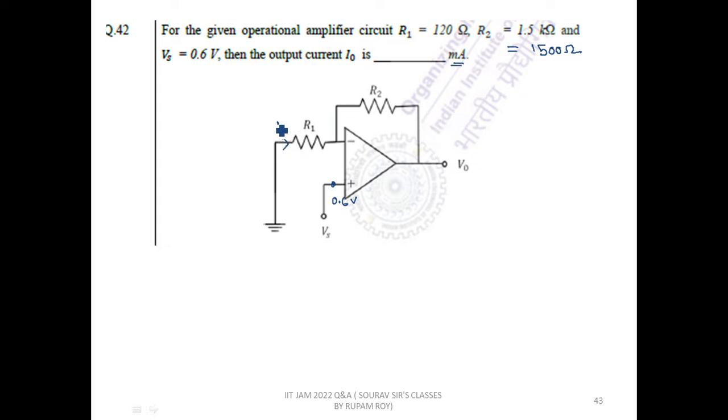Let this be current i1, this is current i2, and i2 is the output current. Now here the voltage is 0.6 volt, so at this point the voltage also will be 0.6 volt. Now here the circuit is grounded.